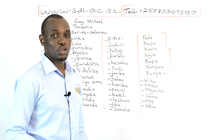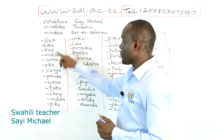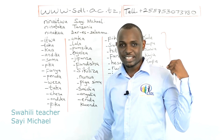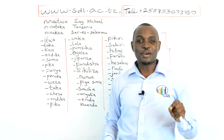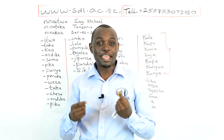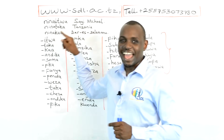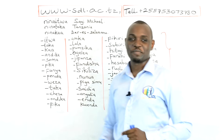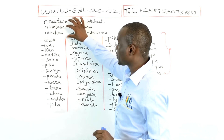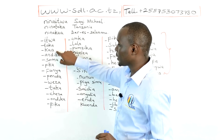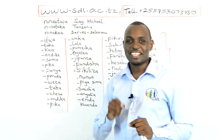These are the verbs we are going to learn today, starting from Itwa. I know you are familiar with Itwa because in the past lesson we saw it. Nina itwa Sai Michael — I am called Sai Michael, that's my name. Nina toka Tanzania means I come from Tanzania. Nina ka Dar es Salaam means I stay in Dar es Salaam. So we already know these verbs: Itwa means to be called, Toka means to come from, Ka means to stay.